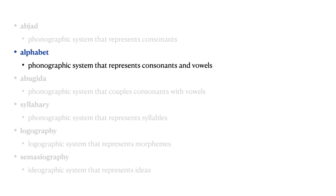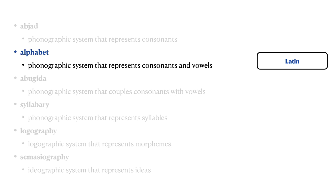An alphabet is a phonographic writing system where symbols can represent consonants or vowels. Greek is an example of an alphabet, and was probably the first alphabet that developed separate vowel symbols distinct from consonant symbols. The Latin alphabet, of which we use a variant, was developed from the Greek alphabet.